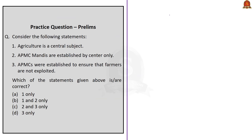The third question is regarding APMC mandis: first statement — agriculture is a central subject; second statement — APMC mandis are established by the centre only; third statement — APMCs were established to ensure that farmers are not exploited. The first statement is wrong because agriculture is a state subject in List 2 of the 7th Schedule. The second statement is also wrong as APMCs are established by states. The third statement is correct — ensuring farmers are not exploited is one of the objectives of APMC. The correct answer is Option D: three only.